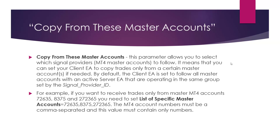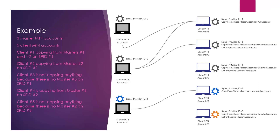For example, if you want to receive trades only from master accounts 1, 2, and 3, you need to set the third parameter: list of specific master accounts. You simply list the master accounts and separate them by comma. You can put one master account number or several. Just make sure to separate them by comma, and of course this can contain only numbers, since there are no letters in MetaTrader account numbers.